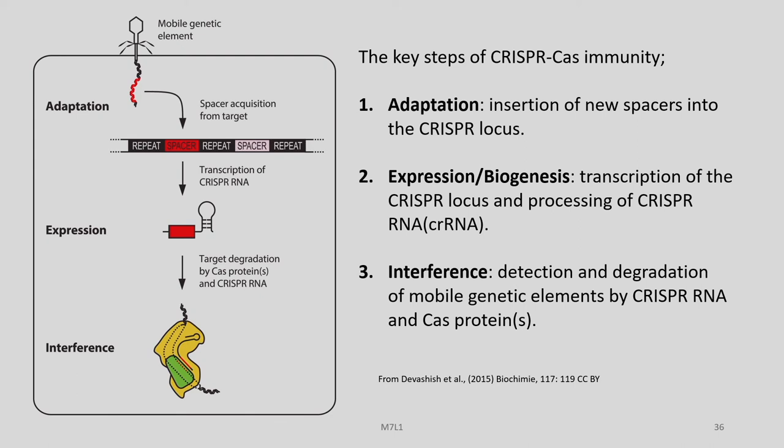The adaptation is the outcome of earlier encounters and at that stage there is no immunity and so there is no interference. But as information is being stored and the final immune state of the bacteria is obtained, any infection by that particular virus will be countered by this defense system. So interference happens at a much later point.